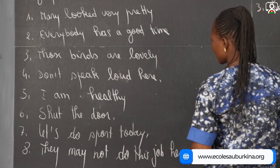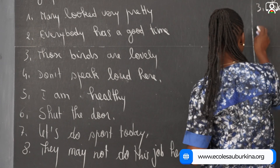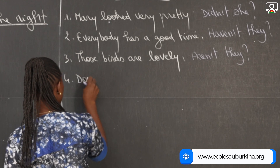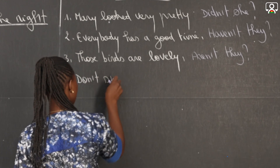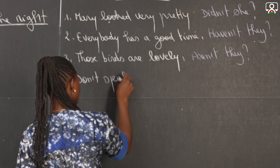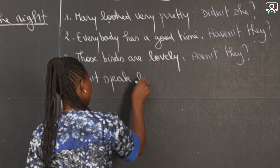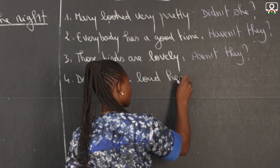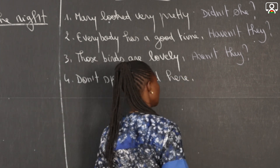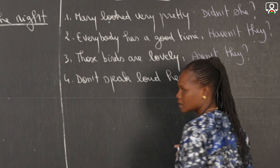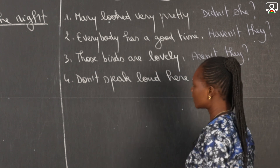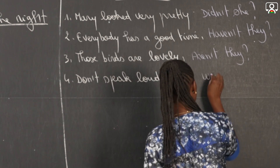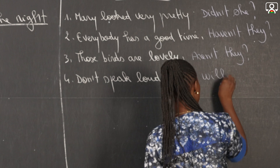Number four: don't speak loud here. This is an imperative sentence. So we are going to have here 'will you'.